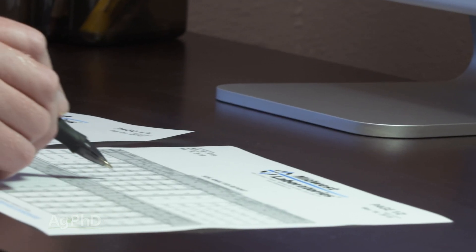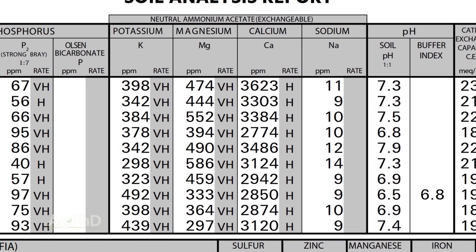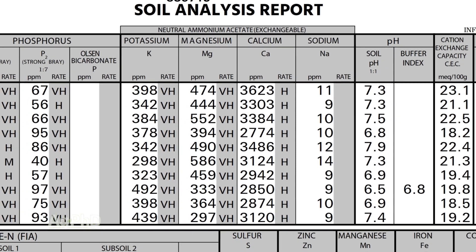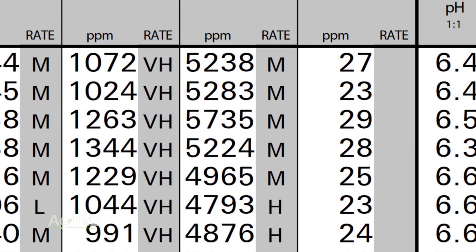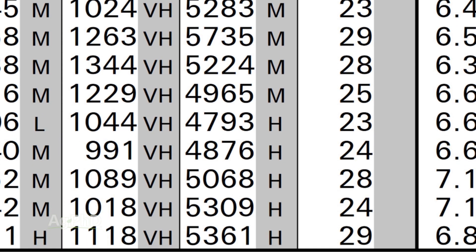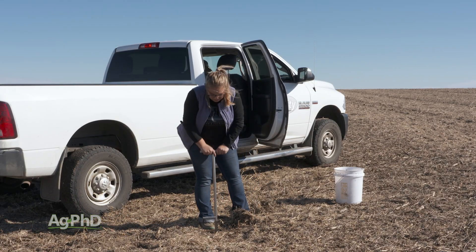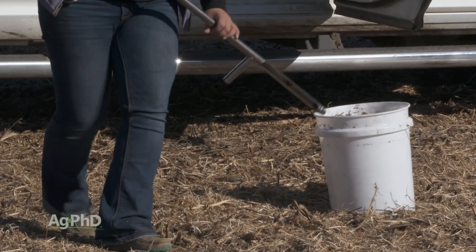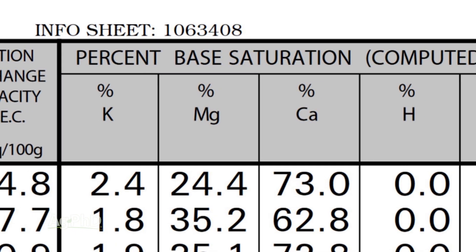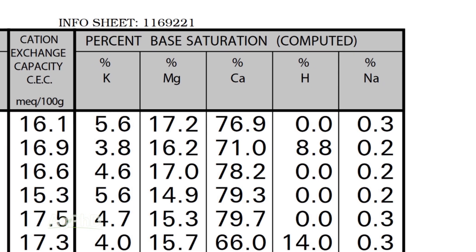When we look at soil tests and we look at parts per million, calcium is going to be the biggest number on the whole test — well, we hope it is. You'll see two thousand parts per million, four thousand, eight thousand. What does that really mean? It's the biggest number on your test, so does it matter if it's two thousand or eight thousand? Certainly it does, and the most important thing is the base saturation test, which tells us on a percentage basis where we're at with calcium.